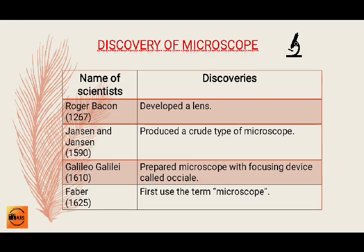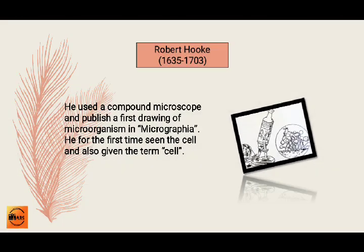We are first going to discuss the discoveries of microscopes. The first name is Roger Bacon, who developed a lens, also called a magnifying device. Then Janssen and Janssen came and produced a crude type of microscope with no focusing device. Then Galileo Galilei prepared a microscope with a focusing device called OCL, which had better visibility. The term 'microscope' was not introduced until after Galileo, when Faber first used the term.